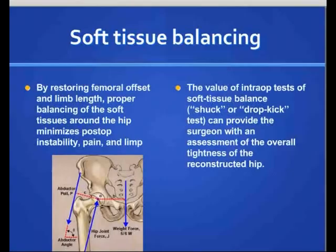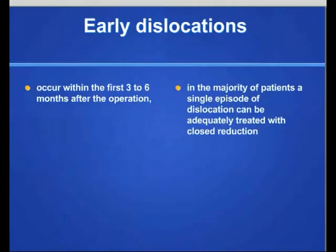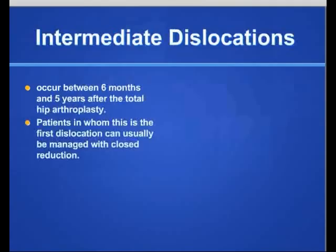The article talks about early, intermediate, and late dislocations. Early is defined as within the first three to six months after the operation. The majority of these patients usually have a single episode of dislocation that is adequately treated with a closed reduction. With intermediate dislocation, defined as between 6 months to 5 years after total hip arthroplasty, closed reduction is again usually the only treatment that is adequate.